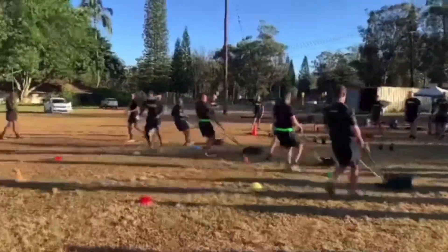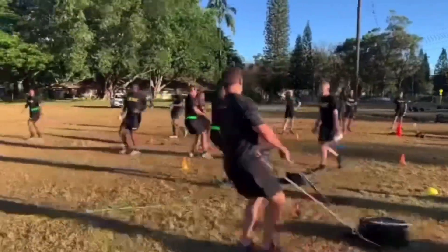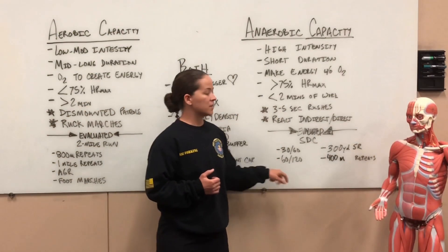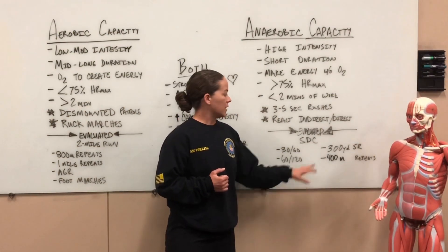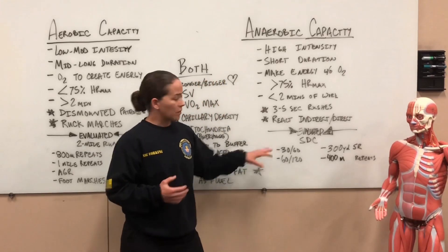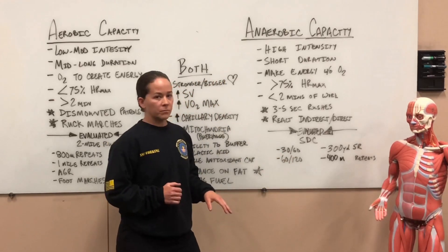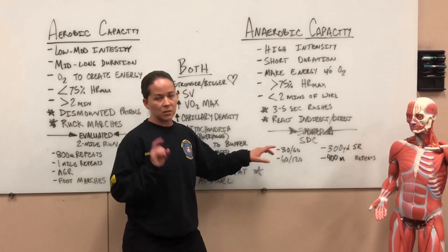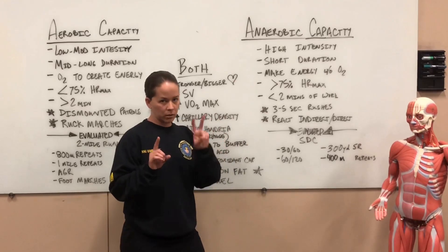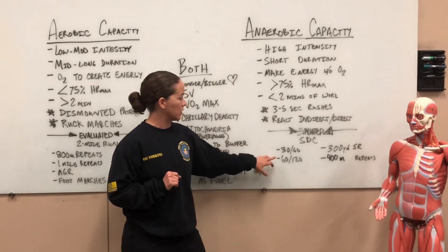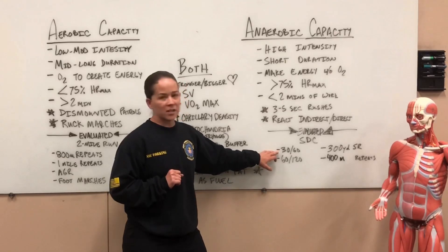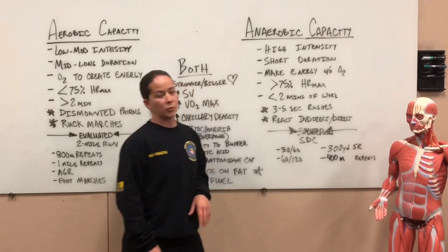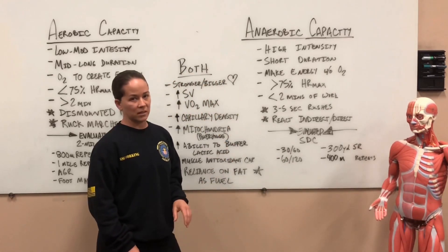Some ways to get better: FM 7-22 chapter 10 highlights many of these activities — 30-60s, 60-120s, 300-yard shuttle run, and 400-meter repeats. We can progress these: for the 30-60s, that's a one-to-two work-to-rest ratio. We can progress to a 30-30, which is a one-to-one work-to-rest ratio, and that's going to help improve our anaerobic capacity even further.